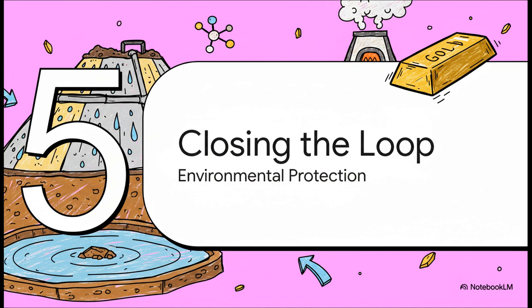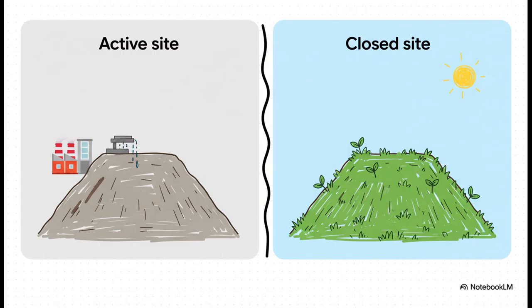It's all about closing the loop. And you know, the contrast between an active site and a closed site is just night and day. Once all the gold is extracted, the heap is rinsed with clean water or special agents that neutralize and detoxify any leftover cyanide. Then the whole thing is capped with soil and revegetated, transforming what was an active industrial site back into a stable, reclaimed landscape.